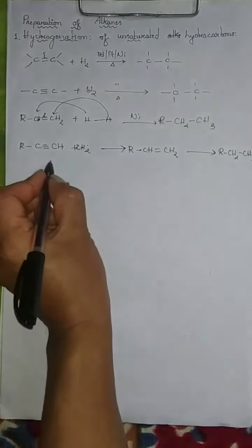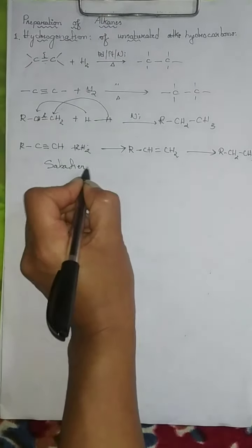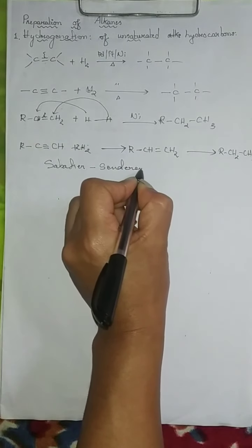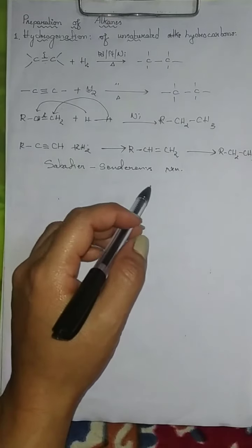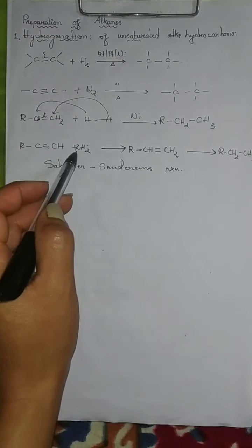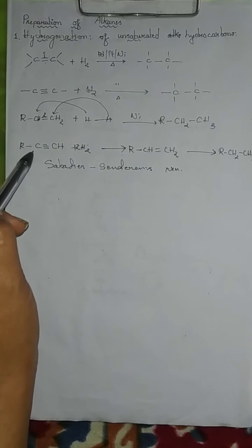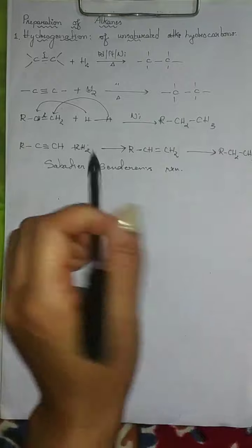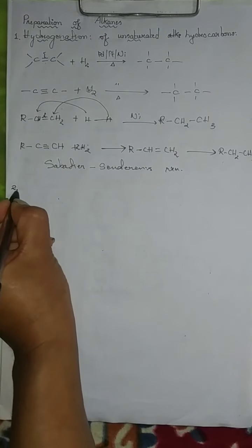This reaction is also known as the Sabatier-Senderens reaction, where two molecules of hydrogen gas are used for the conversion from alkynes to alkanes.